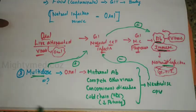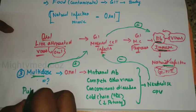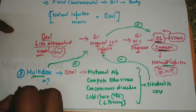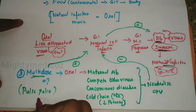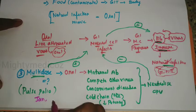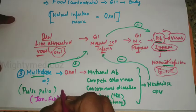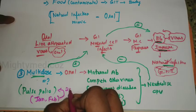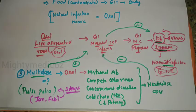This is also the same reason why the pulse polio campaign is given, in addition to the universal immunization schedule. Every year in January or February, on Sundays, the pulse polio campaign gives two drops of OPV. The pulse polio campaign was started in 1995.